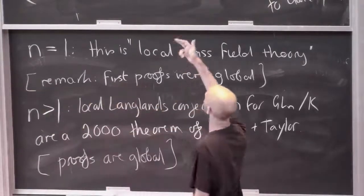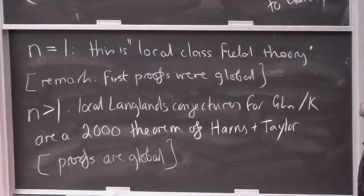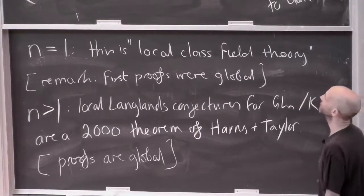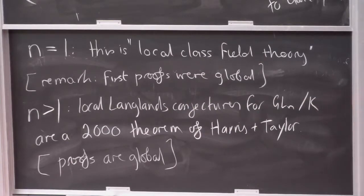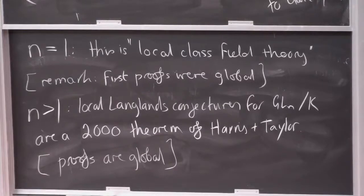What the future holds is that this bijection should be categorified — instead of being a bijection between sets, it should be an equivalence of categories once you've figured out what the categories should be. I think that's what's happened in the function field case. This is something called the geometric Langlands correspondence, which has worked well in the function field case and perhaps will work in this situation soon.